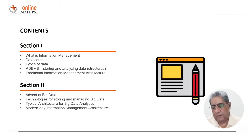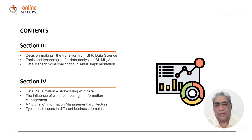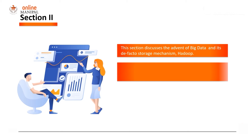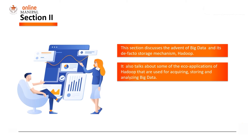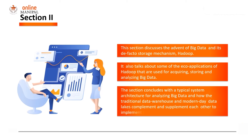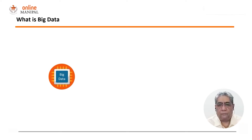Welcome to the second session on evolution of information management systems. In the previous session we discussed about some of the traditional information management architectures such as the ones used for MIS as well as traditional data warehousing and business intelligence systems. In this section we discuss the advent of big data and its de facto storage mechanism Hadoop, and conclude with a typical architecture for analyzing big data and how the traditional data warehouse and the modern data lake work together to complement and supplement each other.